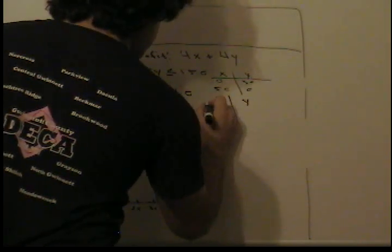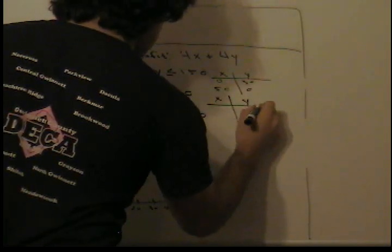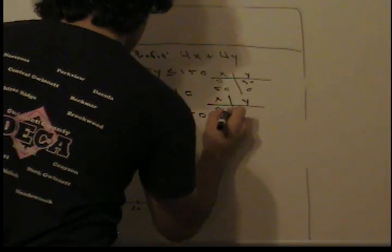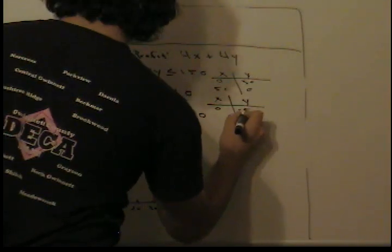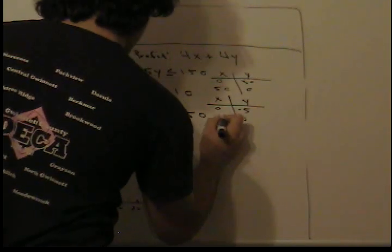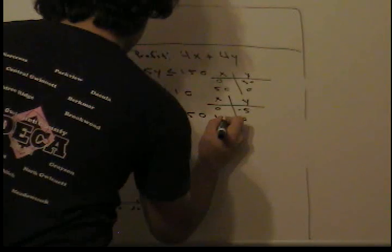For the second constraint, when x is 0, y is negative 5, and when y is 0, x is 10.